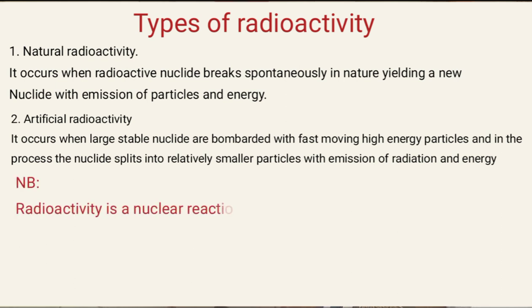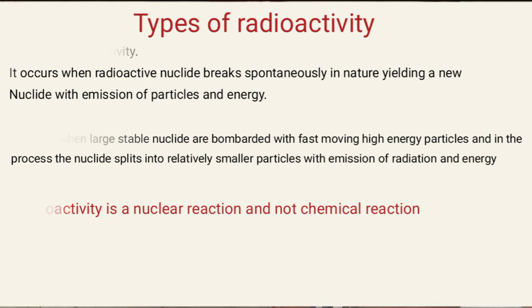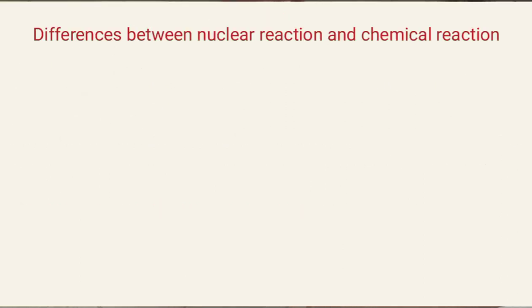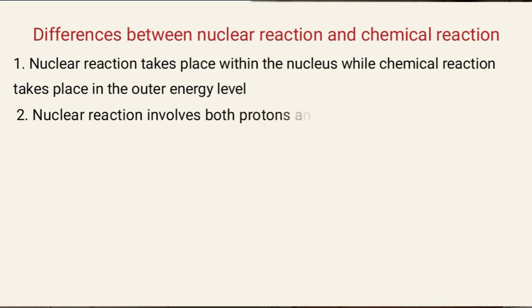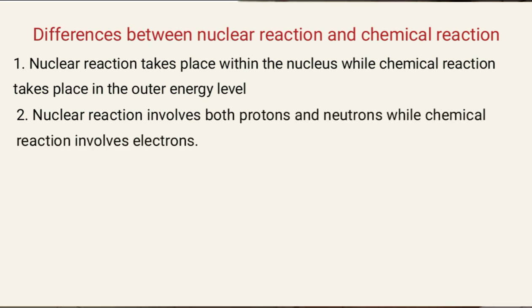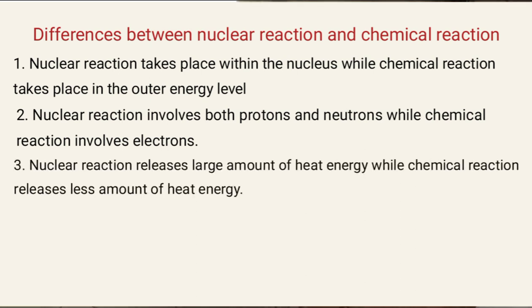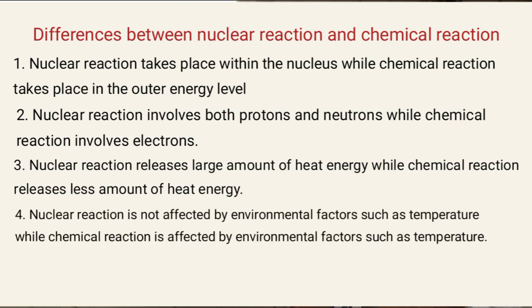Radioactivity is a nuclear reaction, not a chemical reaction. The differences are: first, nuclear reaction takes place within the nucleus, while chemical reaction takes place in the energy level. Second, nuclear reaction involves both protons and neutrons, while chemical reaction involves electrons. Third, nuclear reaction releases a large amount of heat energy, while chemical reaction releases a lesser amount. Fourth, nuclear reaction is not affected by environmental factors such as temperature, while chemical reaction is affected by such factors.